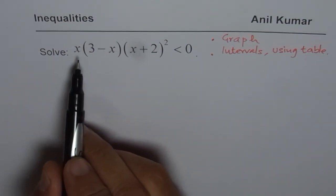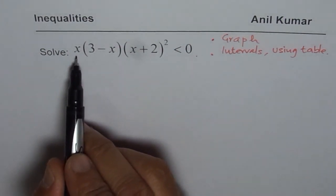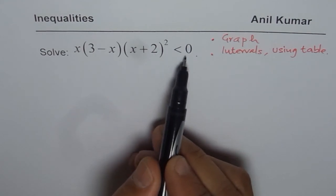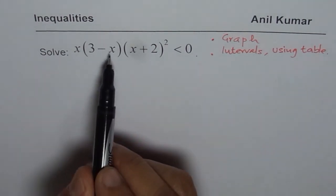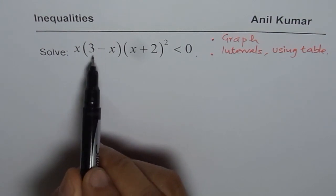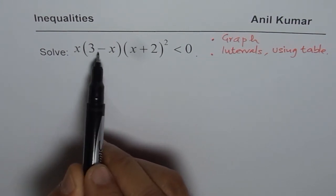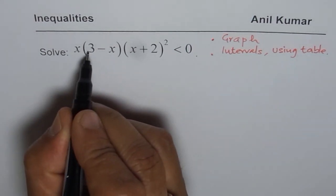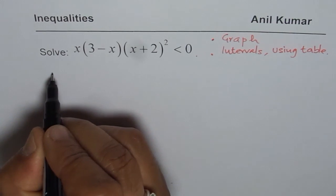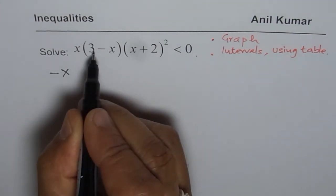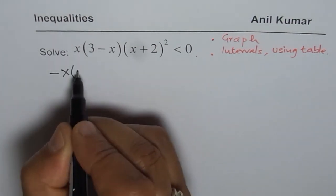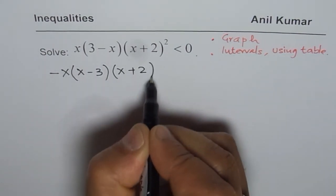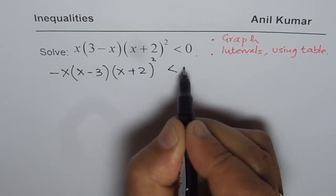We have the polynomial x times (3 minus x) times (x plus 2) whole square, less than 0. It is a good idea to rewrite this by taking minus as a common factor. When I take the minus outside, I get x minus 3, so my inequality becomes minus x times (x minus 3) times (x plus 2) whole square, less than 0.